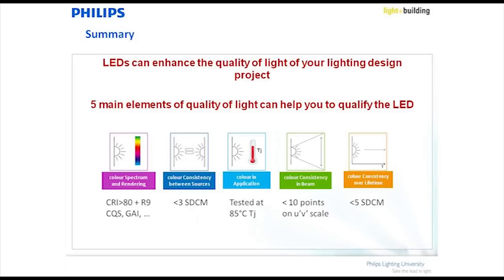To summarize the five main elements of quality of light: we want to make sure these are the focus we have as a company, and we need to hear from end users and lighting designers back to luminaire manufacturers. Don't only ask for the CRI value. Ask more than just CRI — make sure you know what the color consistency is of one LED versus another, or one light source versus another.